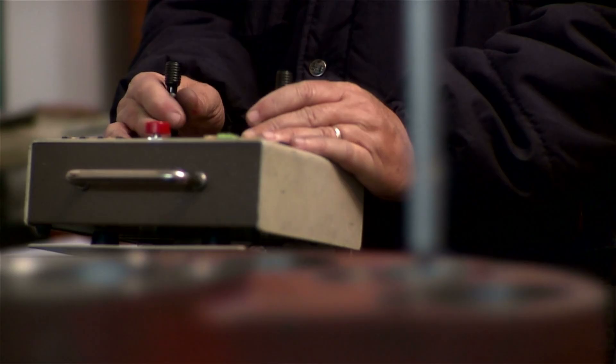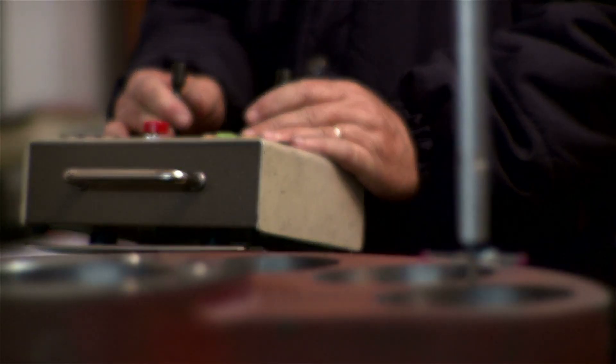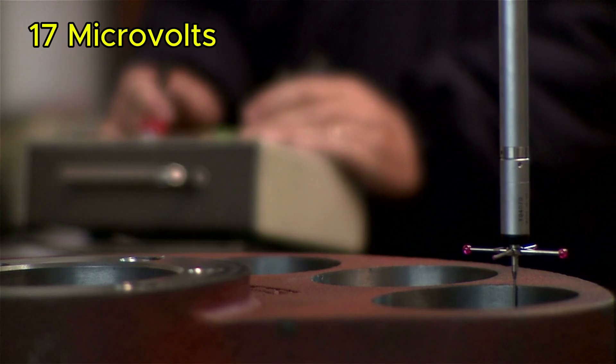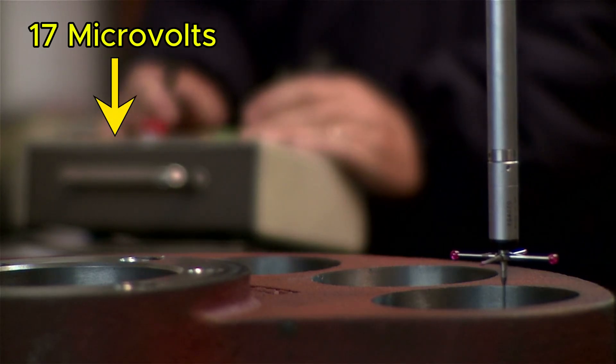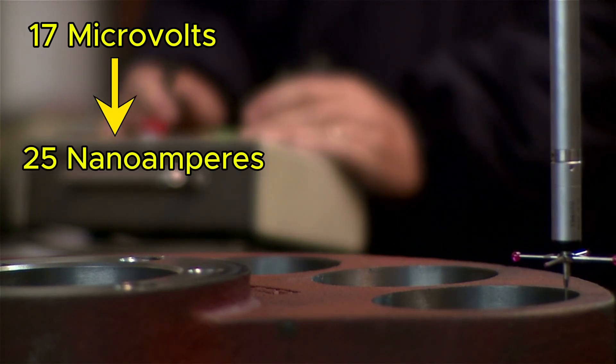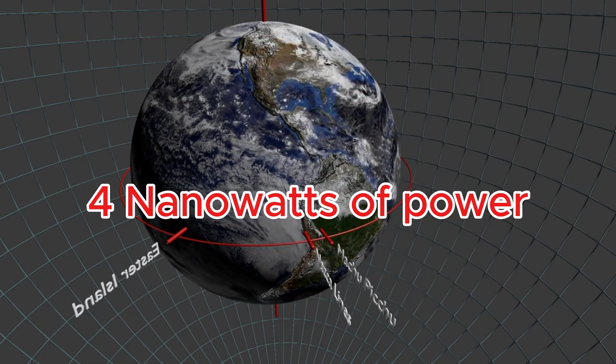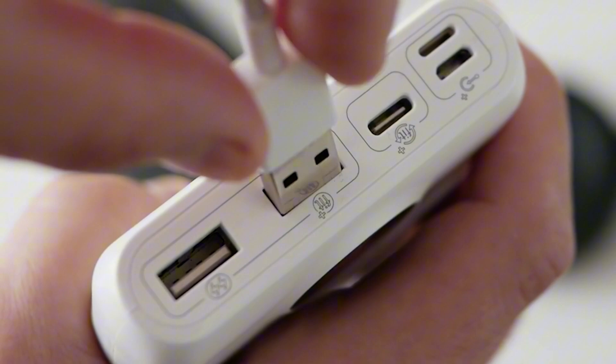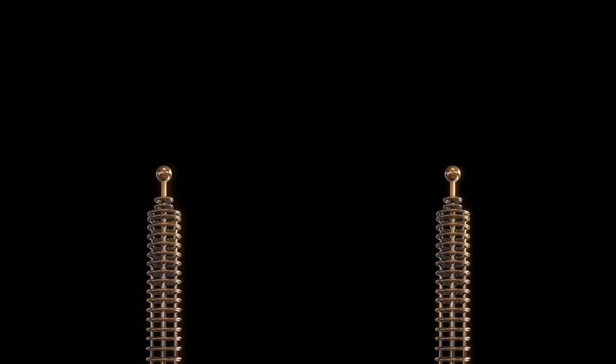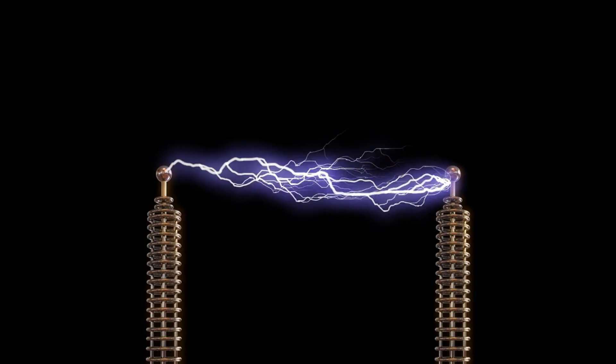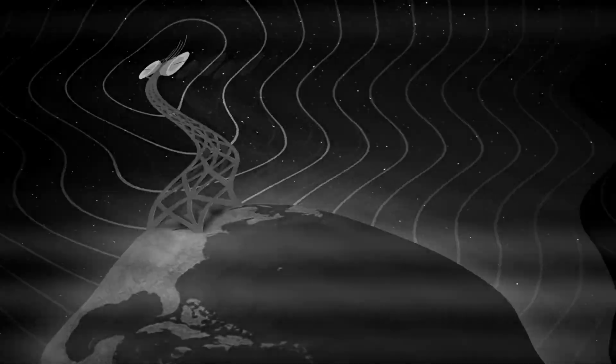The device produced a steady measurable DC voltage of about 17 microvolts and a current of about 25 nanoamperes, equivalent to a power output of roughly 4 nanowatts. That's tiny, a billion times smaller than a typical phone charger, but the signal matched theoretical predictions for both magnitude and direction.